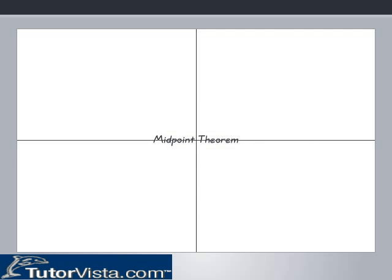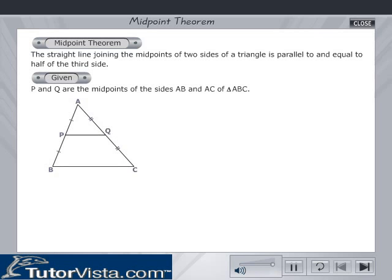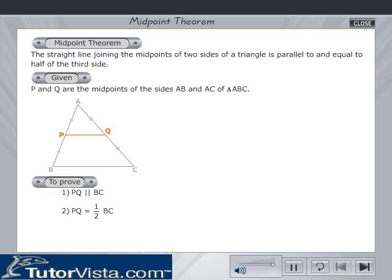Let us learn about the midpoint theorem. The theorem states that the straight line joining the midpoints of two sides of a triangle is parallel to and equal to half of the third side. We are given triangle ABC with sides AB and AC, having P and Q as their midpoints. It is required to prove that PQ is parallel to BC and PQ is equal to half of BC.